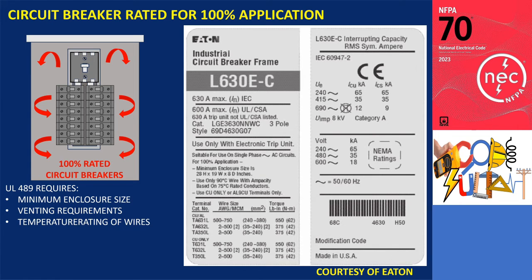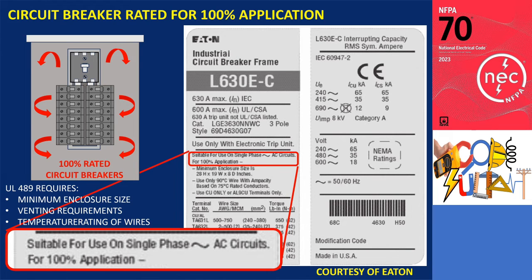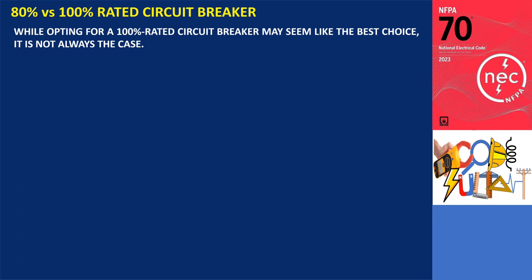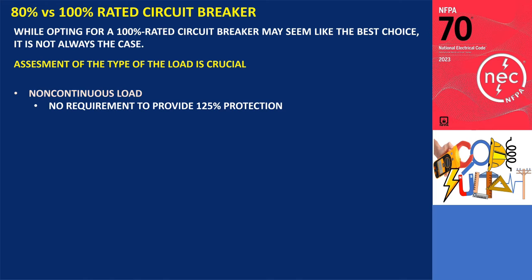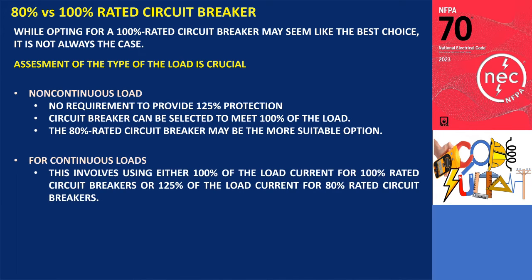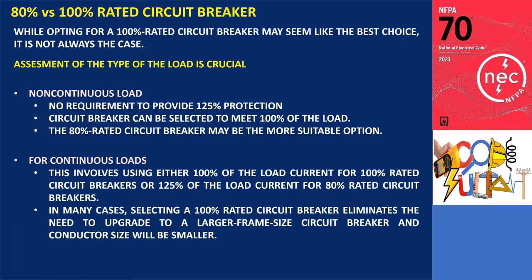It's important to note that a circuit breaker passing these additional tests is still not listed for continuous loading at 100% of its rating unless explicitly marked as such by the manufacturer. While opting for a 100% rated circuit breaker may seem like the best choice, it is not always the case. If the load is non-continuous, there is no requirement to provide 125% protection, and the circuit breaker can be selected to meet 100% of the load — in such situations, the 80% rated circuit breaker may be more suitable. For continuous loads, use either 100% of the load current for 100% rated circuit breakers, or 125% of the load current for 80% rated circuit breakers. In many cases, selecting a 100% rated circuit breaker eliminates the need to upgrade to a larger frame size, and conductor size will be smaller, making it the most cost-effective choice.